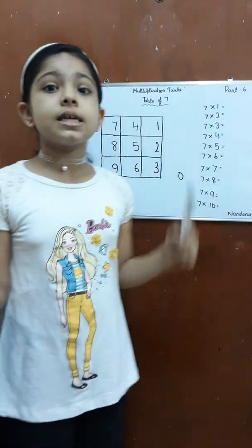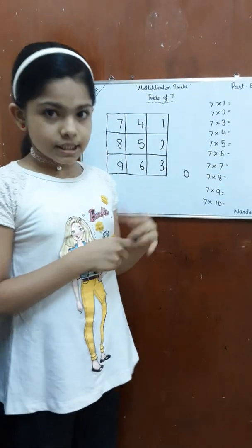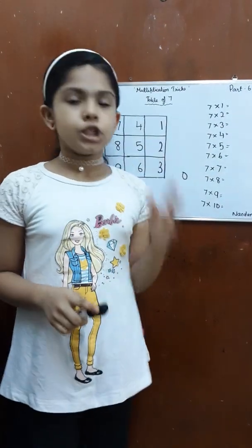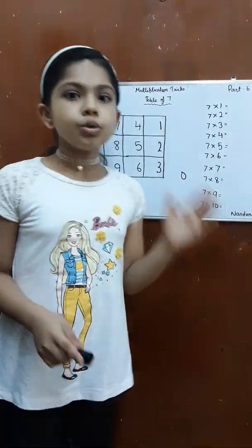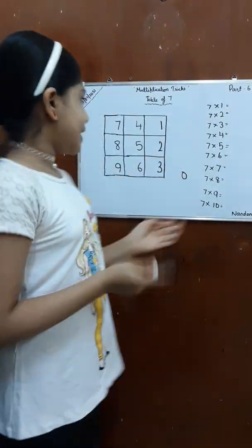Now our second step, which is the tens place digit. To write the tens place digit, we have to follow the pattern: 0, 1, 2, 2, 3, 4, 4, 5, 6, 7. So let's write it.